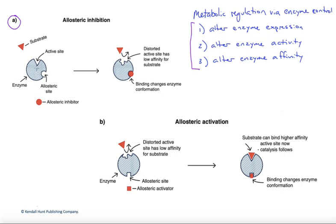The enzyme is the circle, the active site is shown here, and the substrate would come in and bind to be catalyzed. In this particular enzyme, we have an allosteric site that binds this allosteric modulator. What happens is it changes the shape, the conformation of the protein, in this case modifying the shape to make the active site less likely to bind the substrate. We've distorted the active site, and in that case we're actually inhibiting the enzyme by reducing its affinity for the substrate.